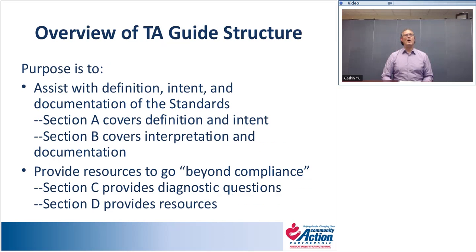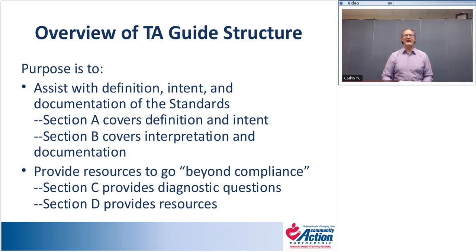A quick overview of the structure for the Technical Assistance Guide. There are two primary purposes for all of our Technical Assistance Guides. The first is to assist with the definition, intent, and documentation of the standard. In each guide, Section A provides additional background on the standard — including the definition, contextual detail, and intent — explaining why it was included in the organizational standards.